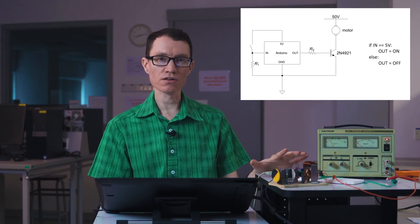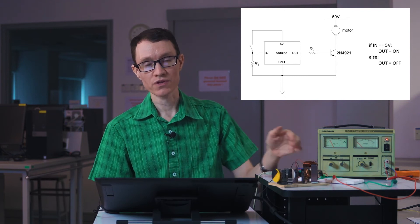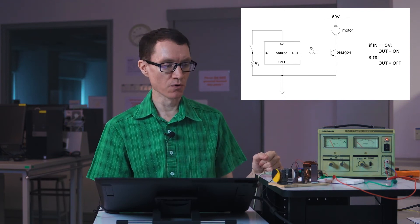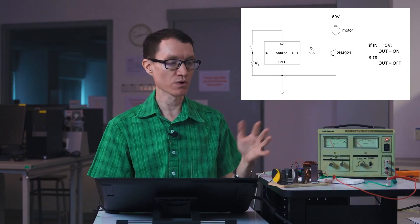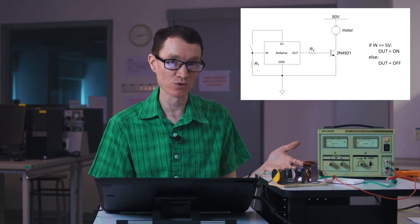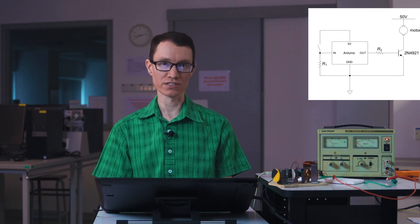But in this case, all of the current required by the motor is passing through the transistor rather than through the switch. Furthermore, the small amount of current used to drive the bipolar transistor can be provided by the microcontroller. But obviously, there wouldn't be enough current provided by the microcontroller to run the motor itself. That's the power of using a transistor as a switch.